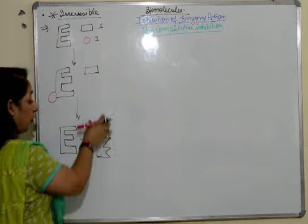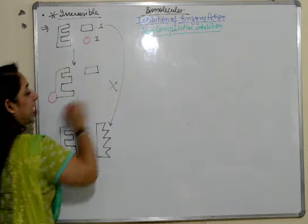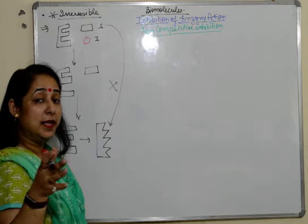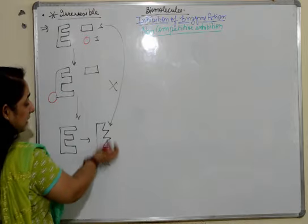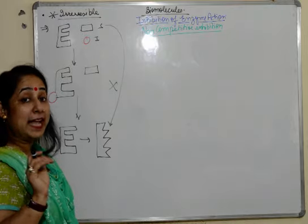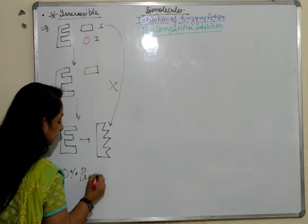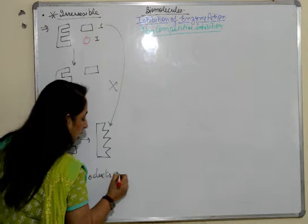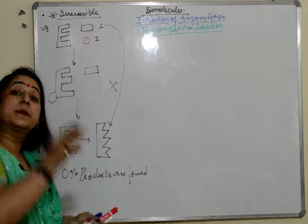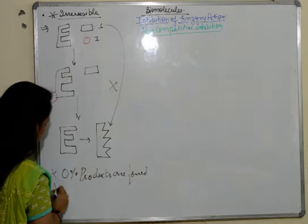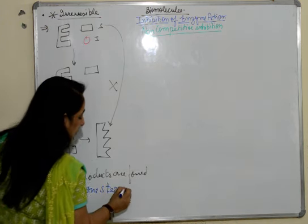What happens now when the enzyme shape changes? This substrate will also not be able to attach to the enzyme. It cannot attach because there is no active site left for attachment. The sites have changed, so there is no attachments here. Zero percent products are formed. Also, it stops in one go, one step only. One step in stoppage.